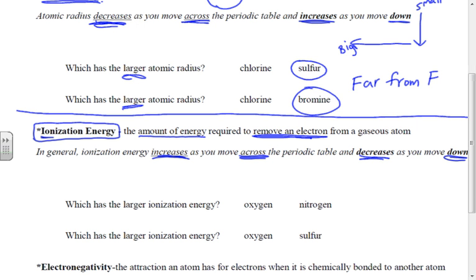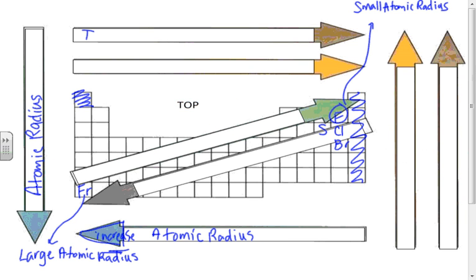So ionization energy gets larger the closer to fluorine we get. On our periodic table we can fill in that trend — this is the first ionization energy, the energy required to pull off that first electron. We see the general trend going to the right and up the table. There are other ionization energies if we wanted to pull off a second electron from the atom — we can have a second ionization energy, and so on.